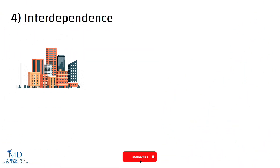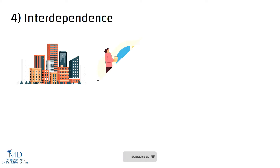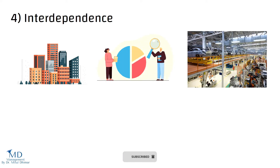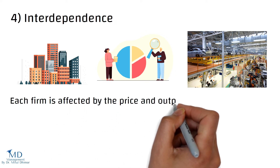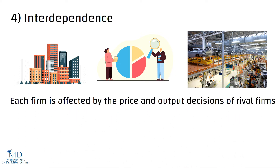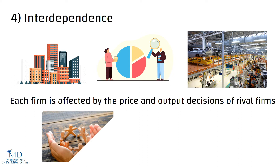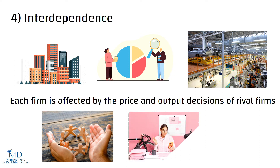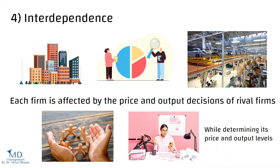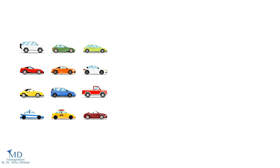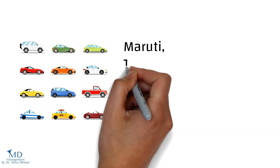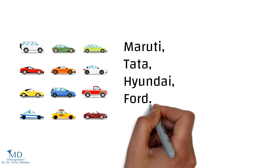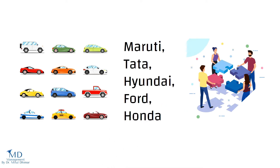Fourth, interdependence. Under oligopoly, since a few firms hold a significant share of the total output of the industry, each firm is affected by the price and output decisions of rival firms. Therefore, there is a lot of interdependence among firms. A firm takes into account the actions and reactions of its competing firms while determining its price and output levels. For example, the market for cars in India is dominated by few firms like Maruti, Tata, Hyundai, Ford, and Honda, illustrating strong interdependence in an oligopoly market.